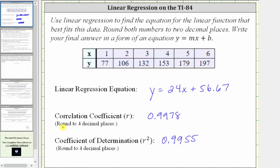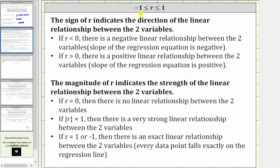Let's first talk about the correlation coefficient, often referred to as r. The value of r is always in the interval from negative one to positive one. The sign of r indicates the direction of the linear relationship between the two variables.